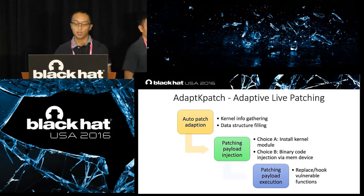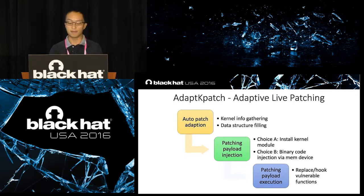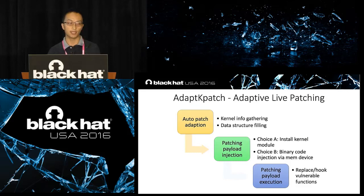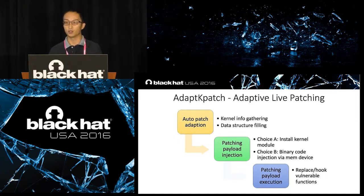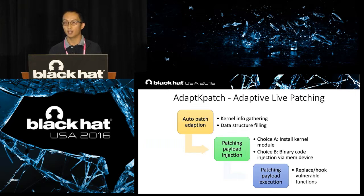Here's how we solve this problem. We call this new framework AdaptKpatch. Basically we have three steps. The first is to collect kernel information and prepare a patch template for each bug. Then we fill the collected kernel information into the template to generate an adapted patch. After generating the adapted patch, we inject the payload into the kernel memory for the patchwork. We have two choices: load a kernel module, or write to the /dev/kmem device. After loading the patch payload into memory, the rest is the same as other patching mechanisms — like in-place hooking, in-place modification, or hook invocations.